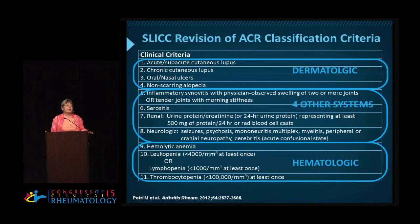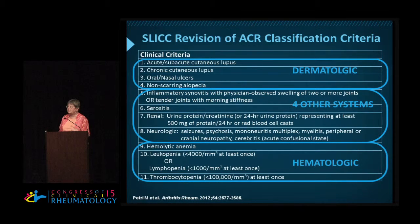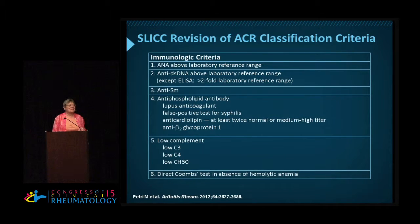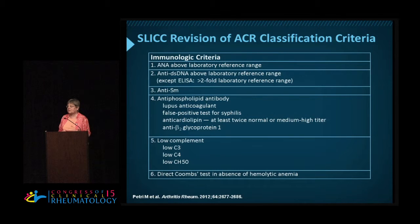The last three are the three hematologic cell lines. They were all grouped together in the old ACR criteria, but we don't want to group them — in regression models they stand alone. Remember, you need at least one from this clinical list and at least one from the autoantibody list. I really wanted to get rid of ANA, but we're stuck — it's still there. The others that were grouped together in the ACR again stand alone in regression analyses: anti-double-stranded DNA, anti-Smith, and anti-phospholipid as separate criteria.